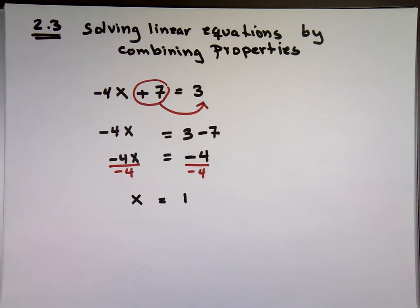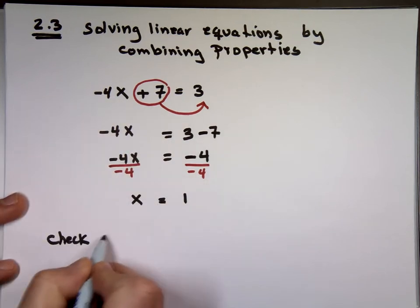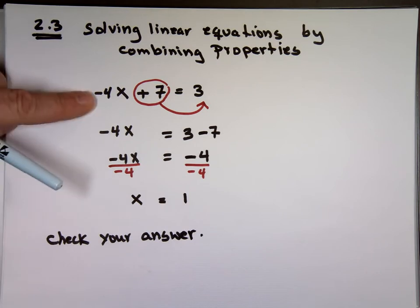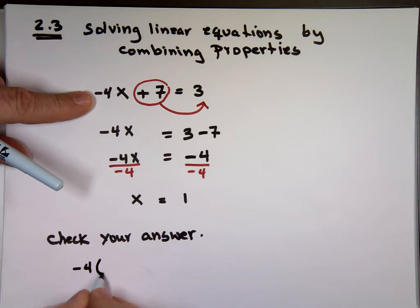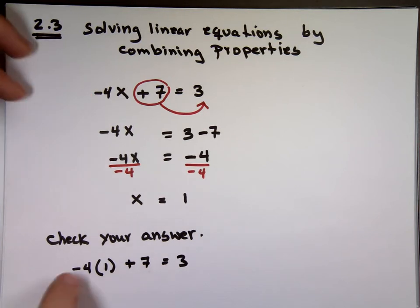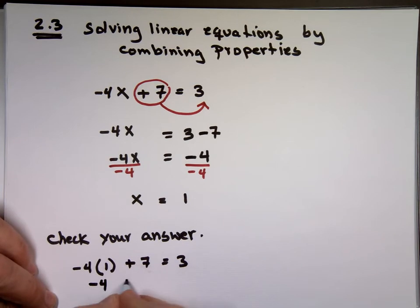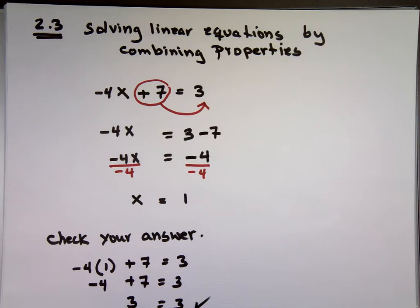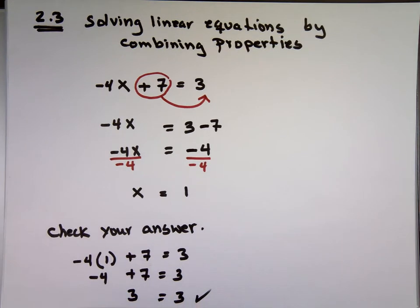If you want to know if you did it right or not, you can take the 1, plug it in. You can always check your answer. That's one way to see if you did it right. How do you check your answer? You go back to the original problem and take the, instead of x, take x out, put the value of x, which is 1, and see if the left side equals the right side. What's negative 4 times 1? Negative 4 plus 7. What's negative 4 plus 7? Isn't that 3? So is 3 equals 3? Yes, it is.